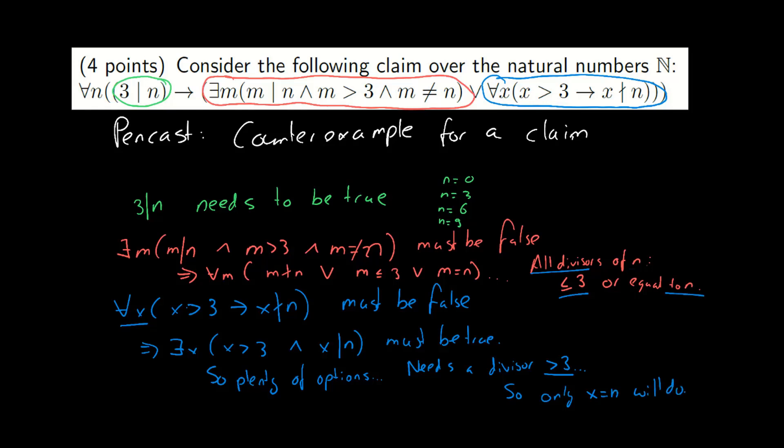So what do we need? Well, we need an n that's larger than 3, so that we have a divisor larger than 3, namely itself. And we need to make sure that all other divisors are smaller than or equal to 3.